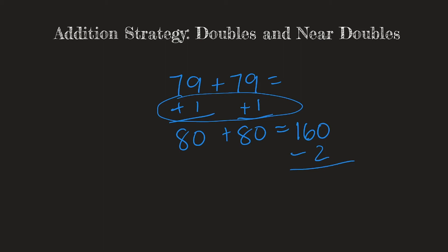So if I subtract 2 from 160, I get 158. So I know that 79 plus 79 equals 158.